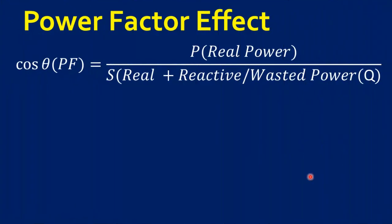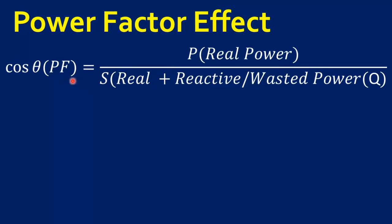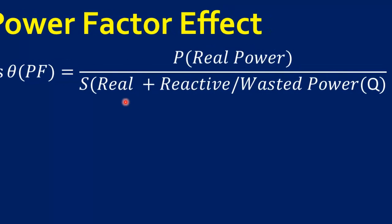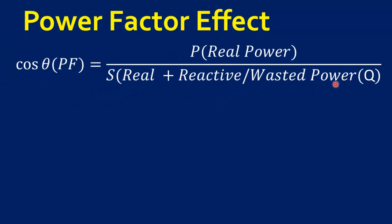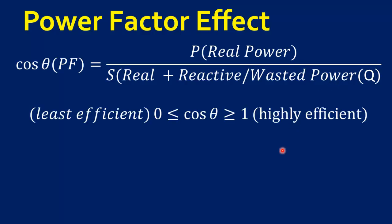Now let's try to understand what is the meaning of power factor. In what way does it affect our system? This is other form of power factor formula. Here, power factor is equal to real power over apparent power. An apparent power is the sum of real power plus reactive or in other words, wasted power. It means the value of cos theta, or power factor is from 0 to 1. Power factor 0 means least efficient system. And power factor 1 means highly efficient system.